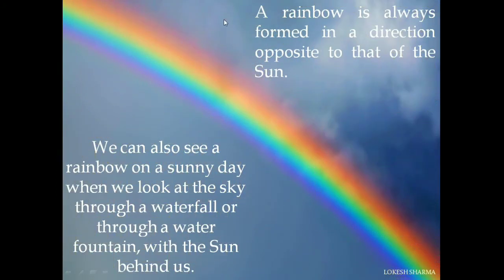We should keep in mind that a rainbow is always found in a direction opposite to that of the sun, because in the direction of the sun, dimly lit objects cannot be seen. Also, we can see a rainbow on a sunny day when we look at the sky through a waterfall or through a water fountain with the sun behind us.